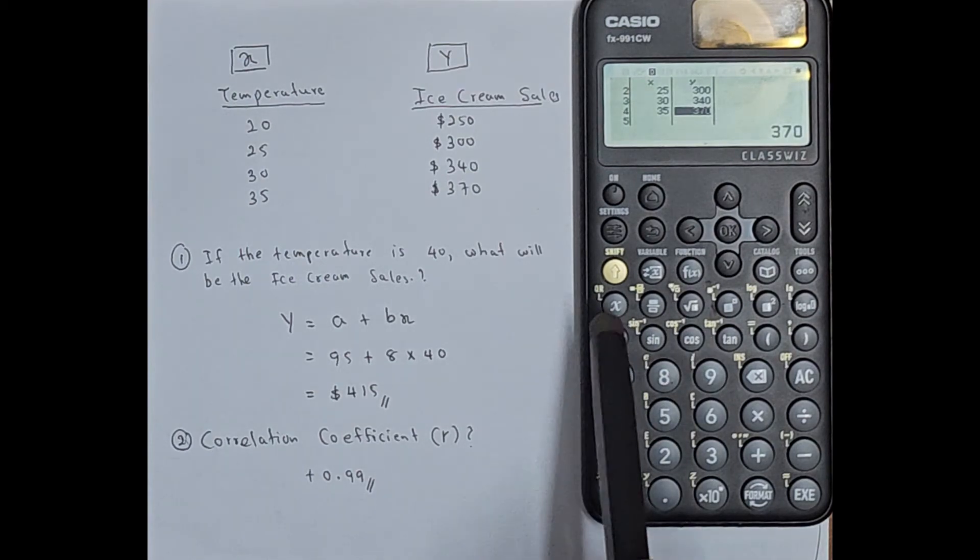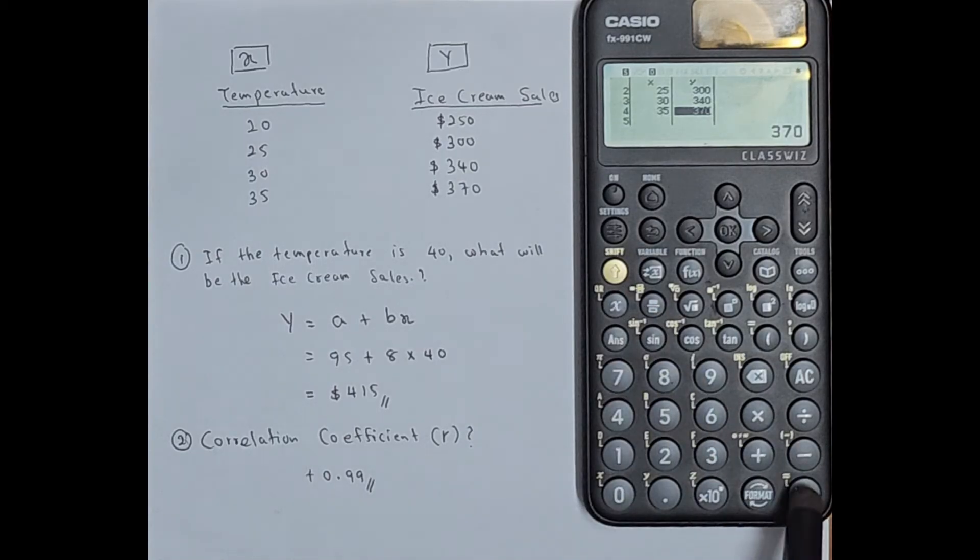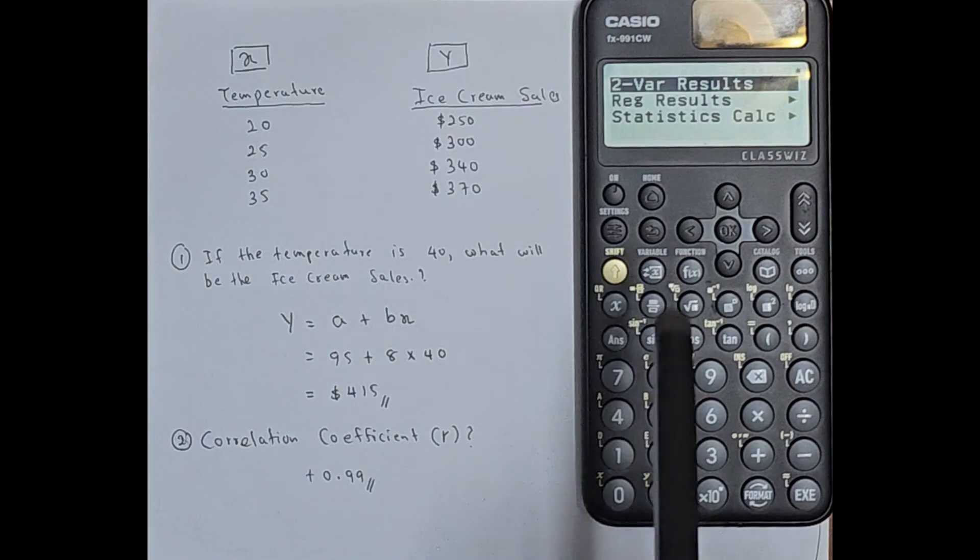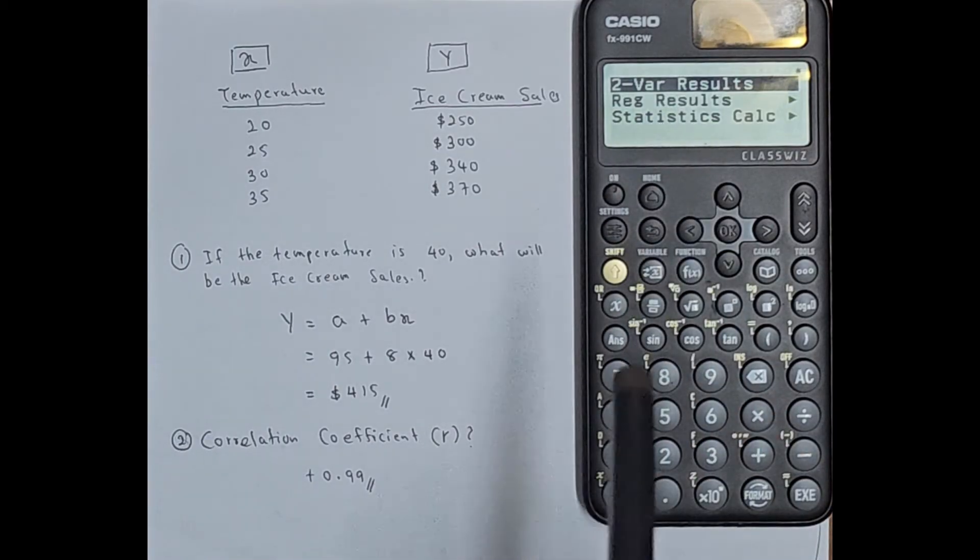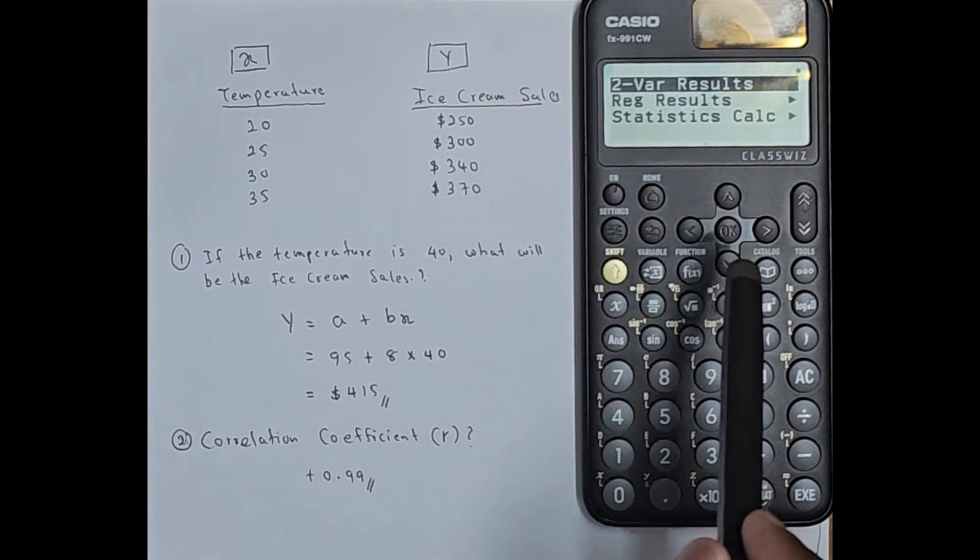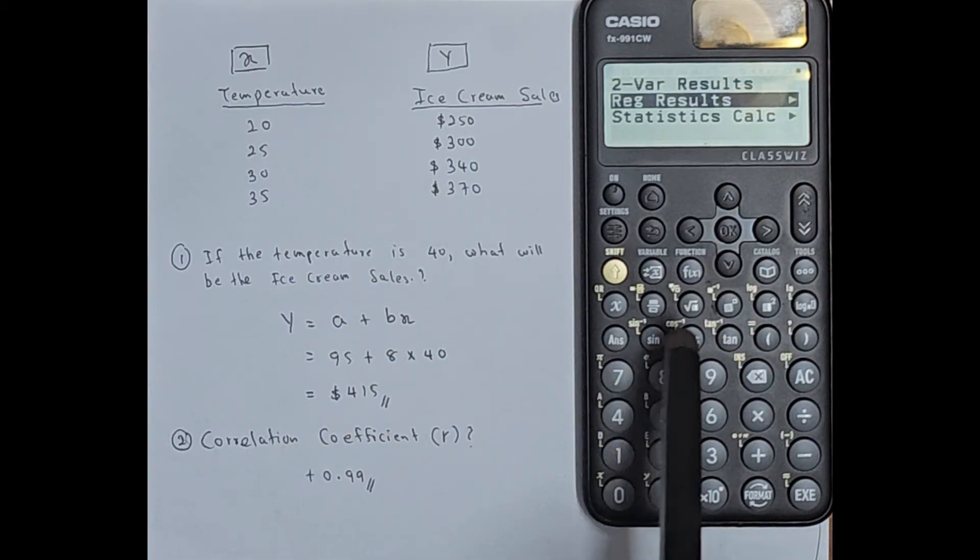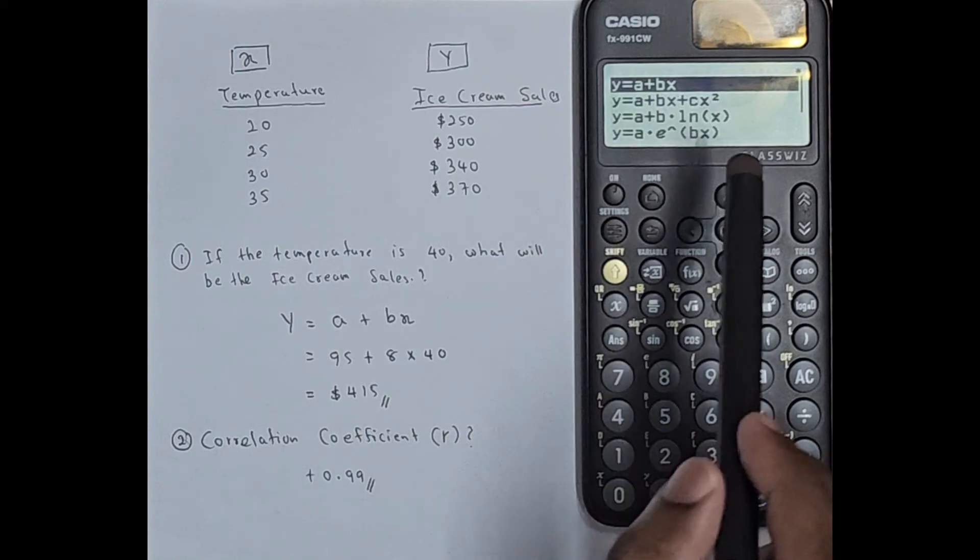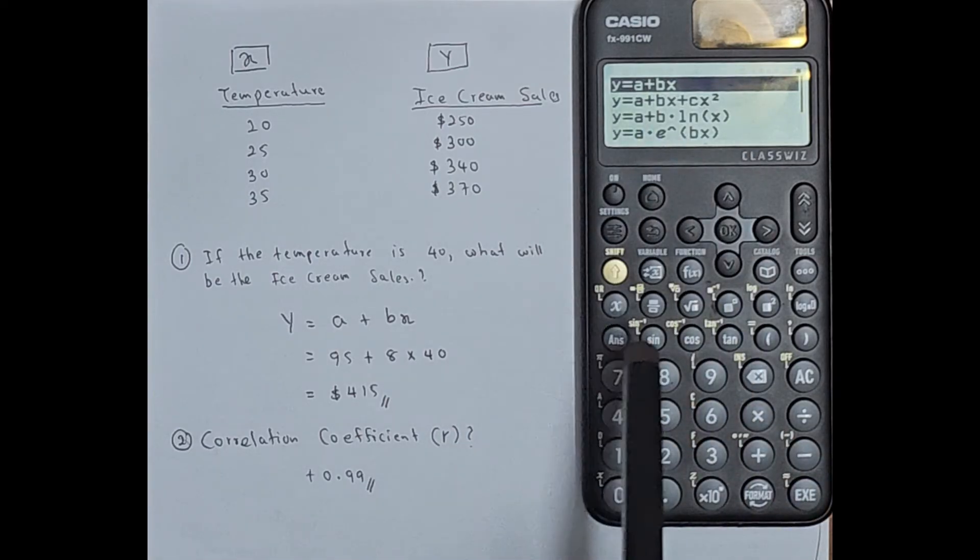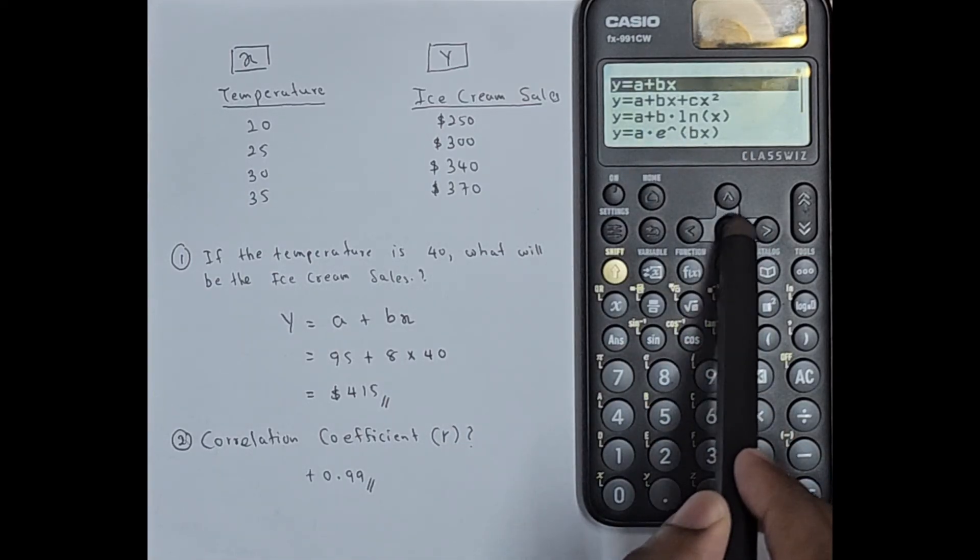Then the next step: press this shift. Once you press the shift button then press this EXE button. So you will get a screen like this. Here you have to go to the regression results. Using the arrow key go to the regression results and click ok. So here we are using Y equals A plus BX. So click ok.